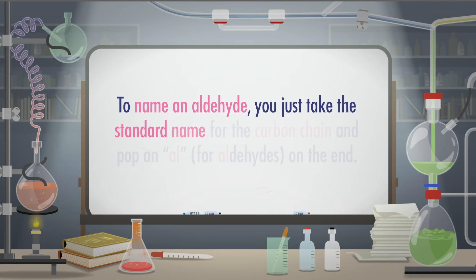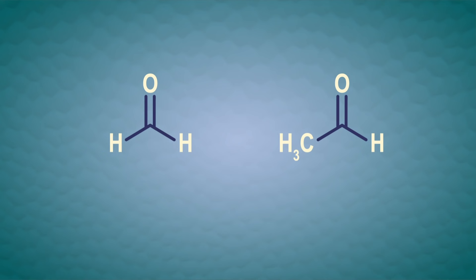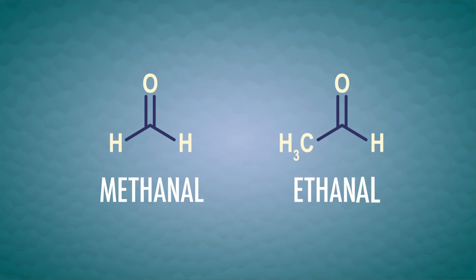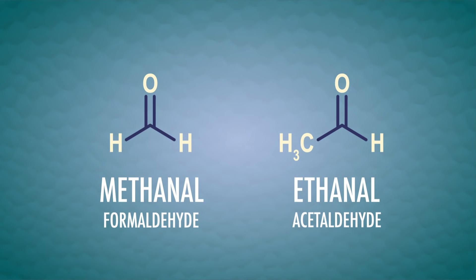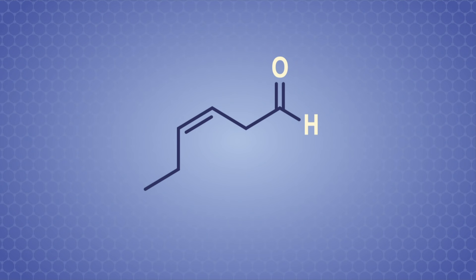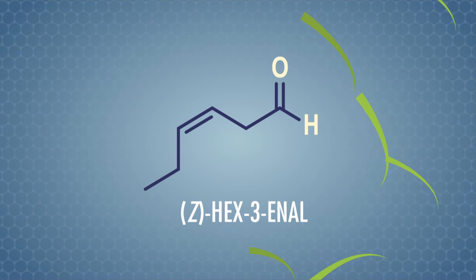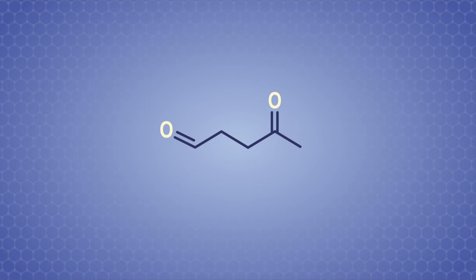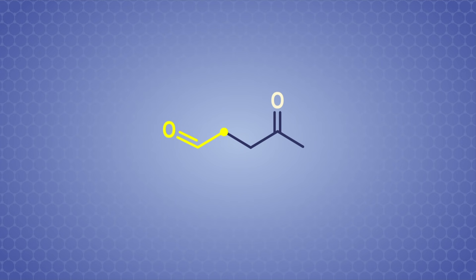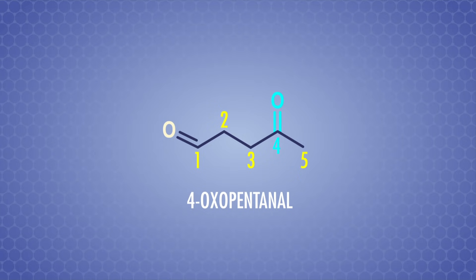To name an aldehyde, you take the standard name for the carbon chain and add 'al' on the end. For example, these aldehydes are methanal and ethanal. But these substances have been used by chemists for ages — ethanal was first discovered nearly 250 years ago — so they have old common names you have to learn. Many are straightforward and just end in 'aldehyde,' like acetaldehyde and formaldehyde. Other aldehydes go by their IUPAC names. For example, Z-hex-3-enal smells of freshly cut grass and is an attractant for lots of insects. And even though 4-oxopentanal has both a ketone and an aldehyde, the aldehyde takes priority in nomenclature and is designated position 1; we count along the carbon chain and use the prefix 'oxo' to indicate the ketone is on carbon 4.